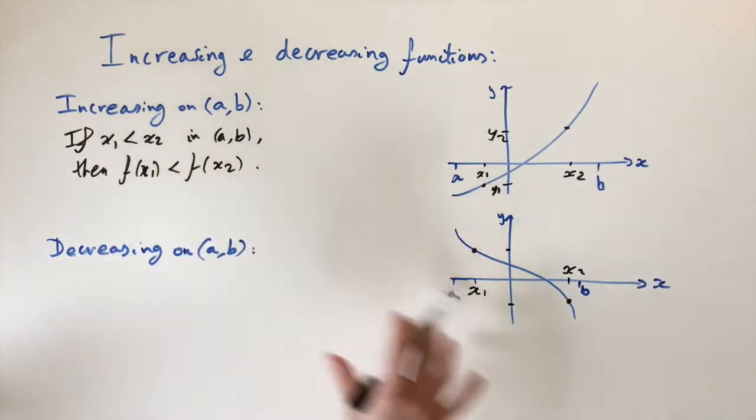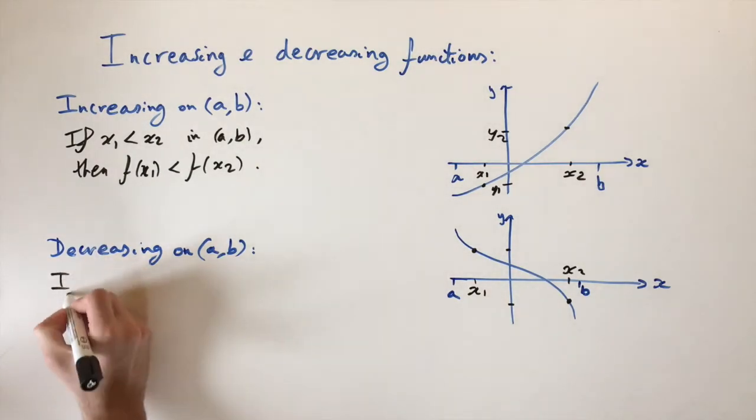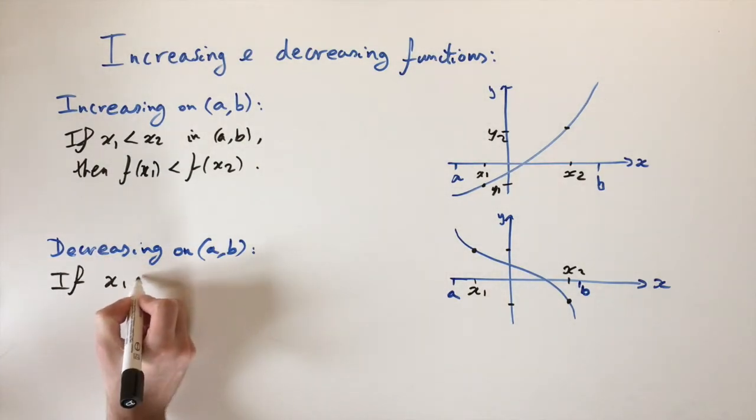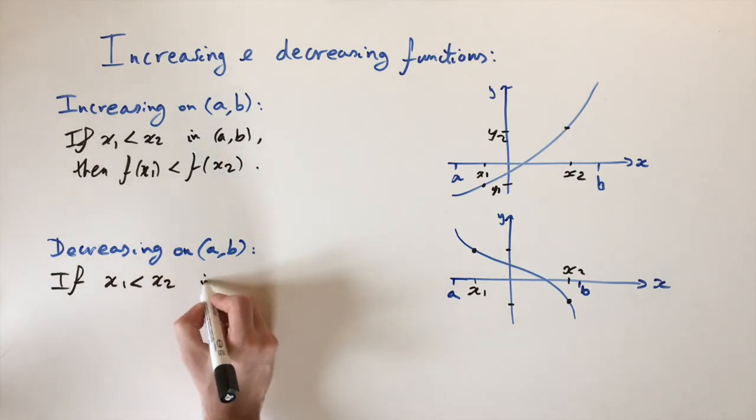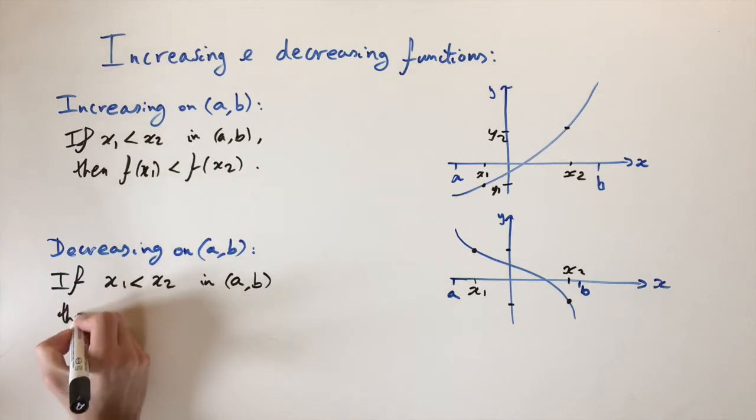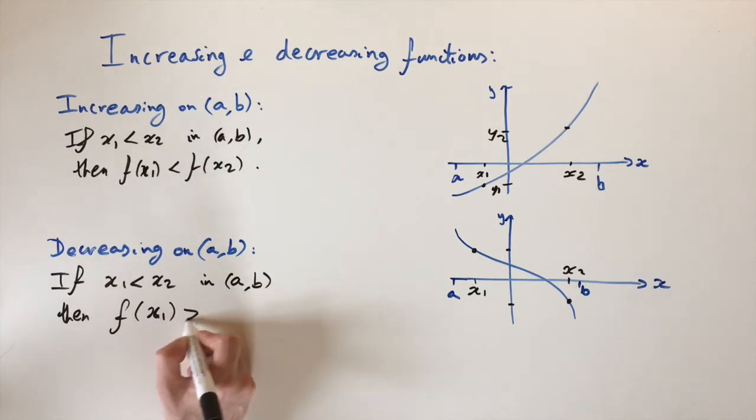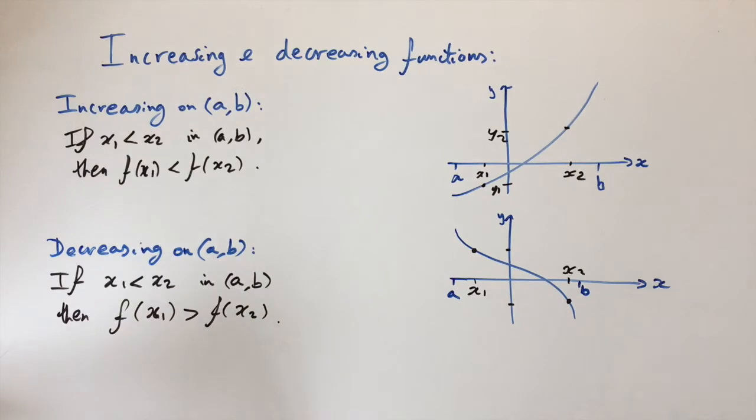So let's do the same for decreasing functions. It's very similar. So if x1 is less than x2, again, we take two points in the interval (a,b), then it's the same thing, but the inequality goes the other way around. So then f(x1), this is greater, strictly greater than f(x2). And so if a function satisfies this property for all points in the interval, that's how we define it to be decreasing in that interval.